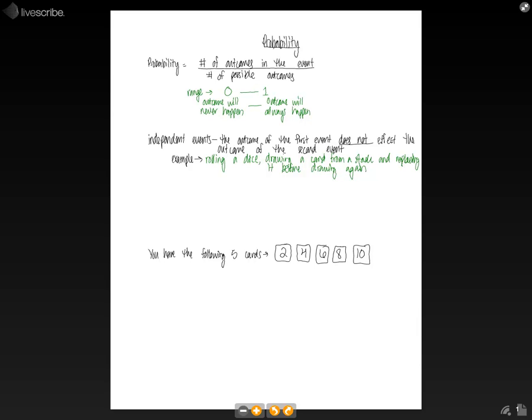And so this differs from if you didn't replace the card. Your probability of your second draw is going to be different because now you have one less total number for your possible outcomes if you removed the card and didn't replace it. So that would be, you'd use different equations for that. But for this situation, we're just looking at independent events and replacing the card ensures that you do not affect the outcome of the second event.